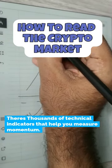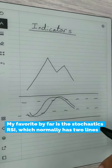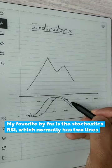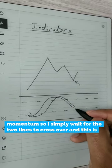There's thousands of technical indicators that help you measure momentum. My favorite by far is the stochastics RSI, which normally has two lines. Let's just say I'm looking to buy over here but I want to time the momentum.